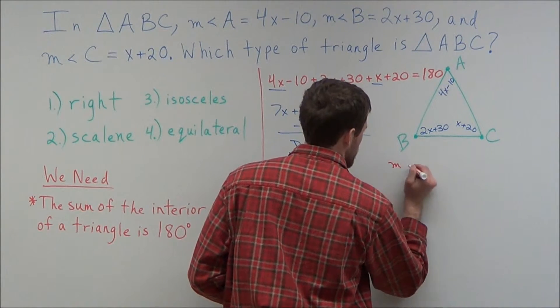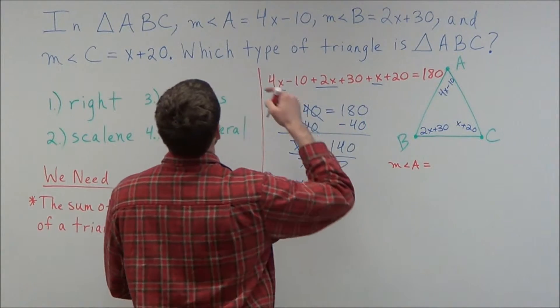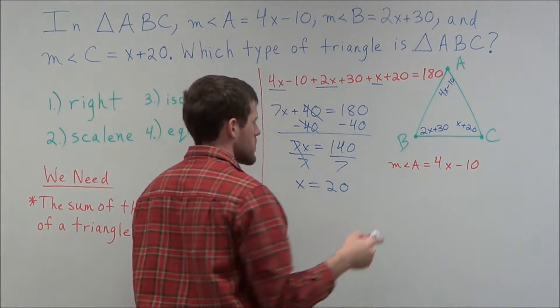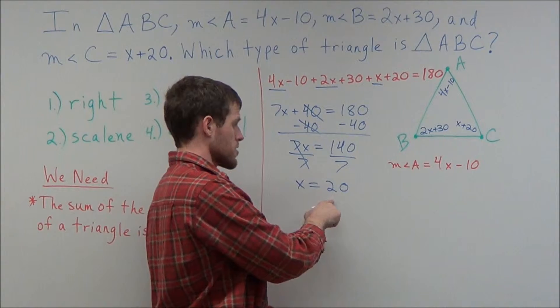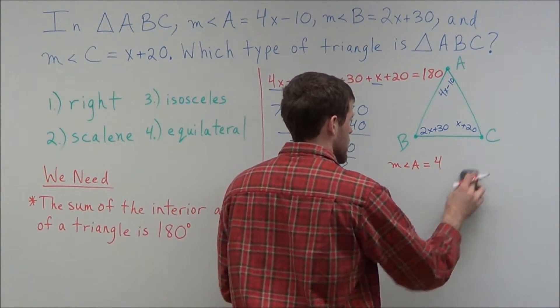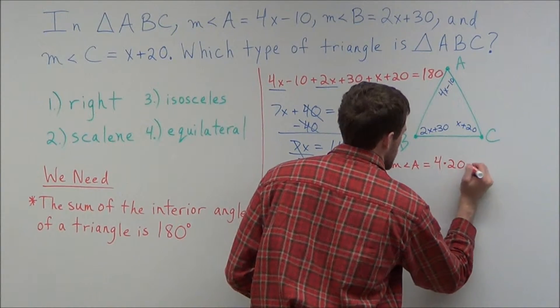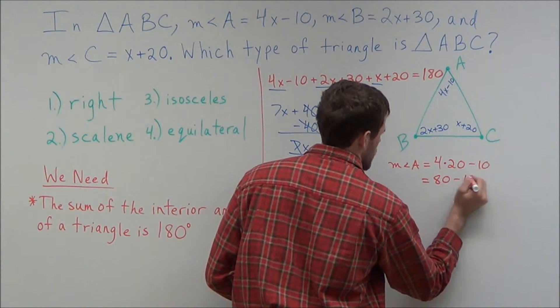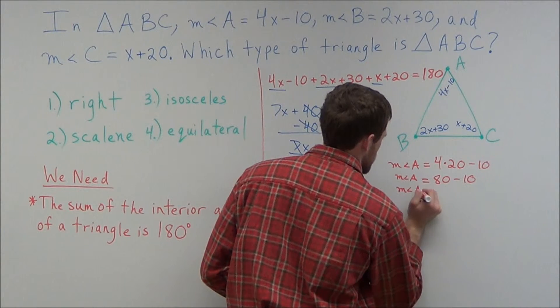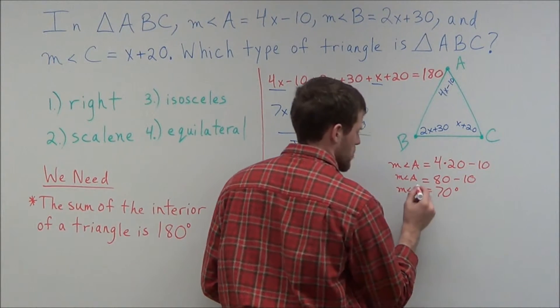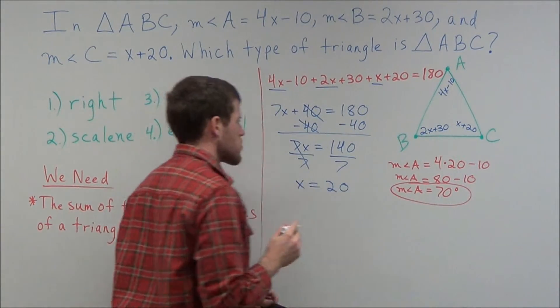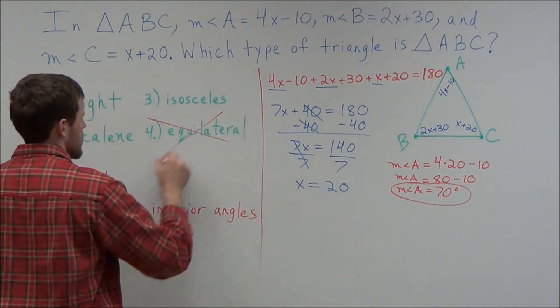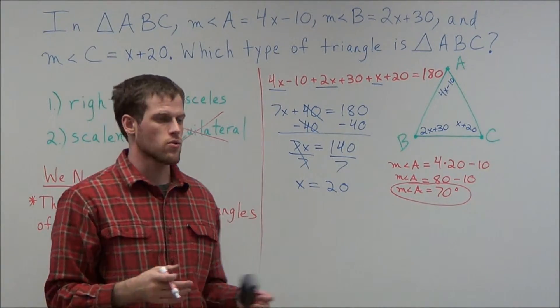So we look at the measure of angle A equals 4x minus 10. So what we could do is we're going to replace x with 20 because we just found x equal to 20. So instead of 4 times x, now we have 4 times 20 minus 10. And 4 times 20 is 80, so we have 80 minus 10 for the measure of angle A. And now we have the measure of angle A equals 70 degrees. Now we'll put our symbol in. So right away that rules out answer choice 4. Because an equilateral triangle will have three angles equal to 60 degrees. All the angles will be the same.